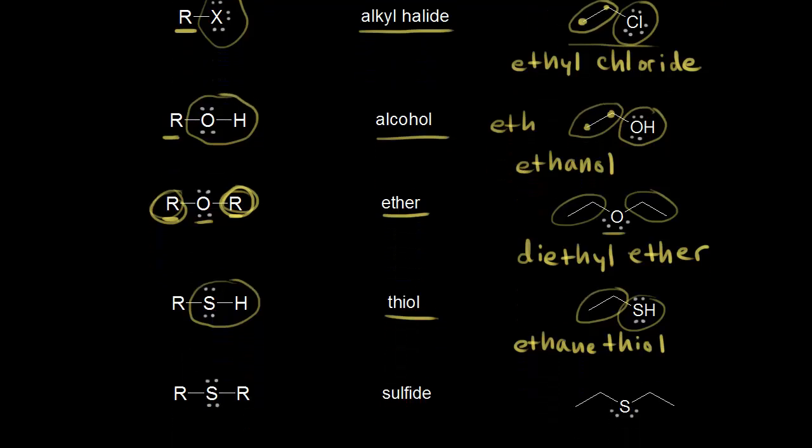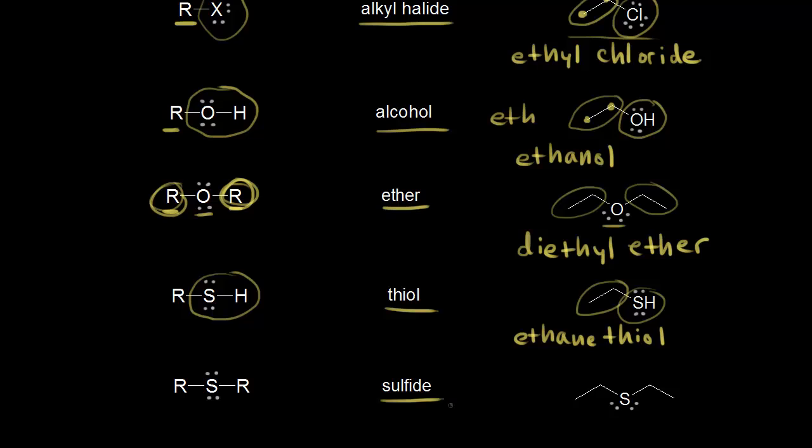Next we have a sulfide. A sulfide is similar to an ether. Remember for an ether we had ROR. For a sulfide we have RSR. So it's completely analogous to an ether.